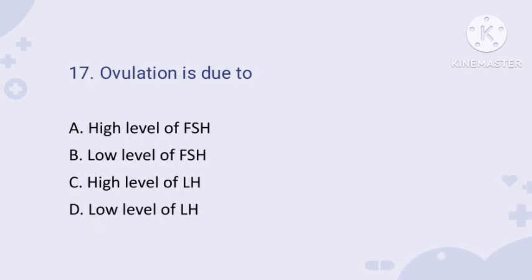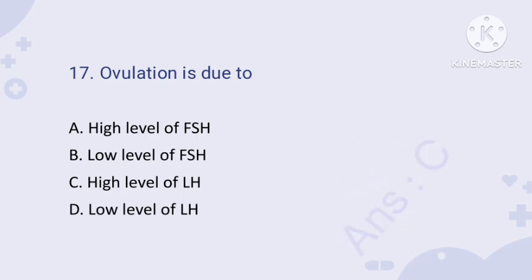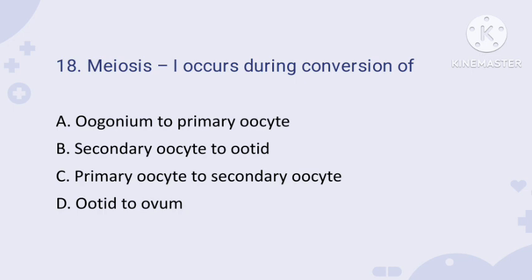Question number seventeen: ovulation is due to which hormone? Ovulation is due to the luteinizing hormone (LH). Among the given options, the correct answer is a high level of LH — a high level of LH is responsible for ovulation.